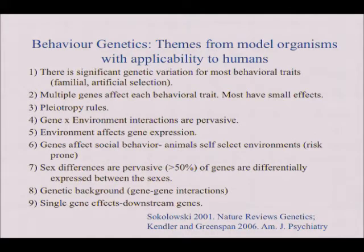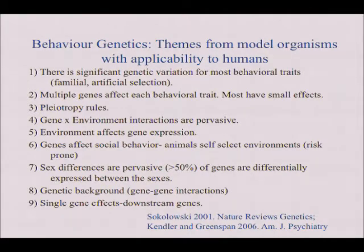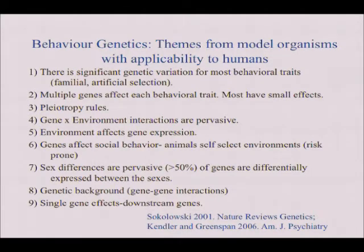We now know that most genes have small effects, but there are some more major effect genes, and that's what I'm going to talk about today — the foraging gene. Pleiotropy rules: when you find a gene that affects behavior, it will almost always have multiple phenotypes — one gene affecting many things. It could be different behaviors or some developmental trait, and often those traits are not related in a causal way. Gene-by-environment interactions are pervasive and persuasive. The environment affects gene expression, and sex differences are also very common in gene expression.